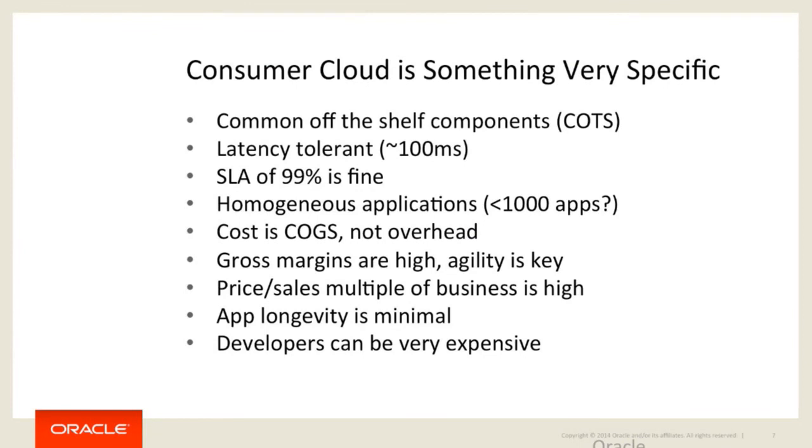More technically on the finance side, your price-to-sales multiple of your business is higher. An internet multiplier is typically seven times your sales, which means that if you're getting more users driving more sales for which you have to buy more hardware, your commensurate market value is going up much quicker than a typical enterprise company's multiplier would. This really ties into your ability to capitalize. The longevity of your apps is very short — you need to be very effective and competitive in your app development for like five years. After that, you've either won the marketplace or you've lost it. And the developers can be extremely expensive, and you can afford it for the reasons above.